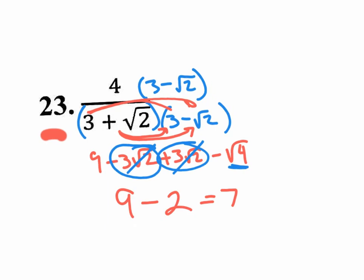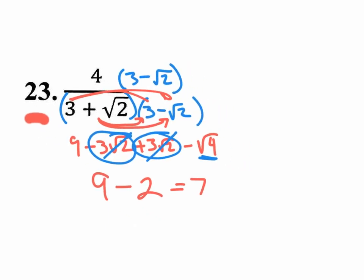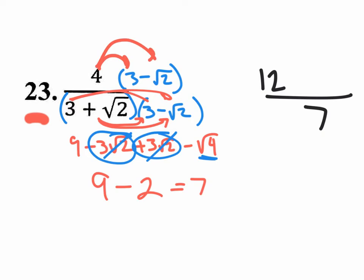Now that's just the denominator. On the answer, we're going to have a 7 on the bottom. Now for the top, I still need to take that 4 and distribute it. 4 times 3 is 12, and then 4 times negative square root of 2 is negative 4 square root of 2. That would be the final answer.